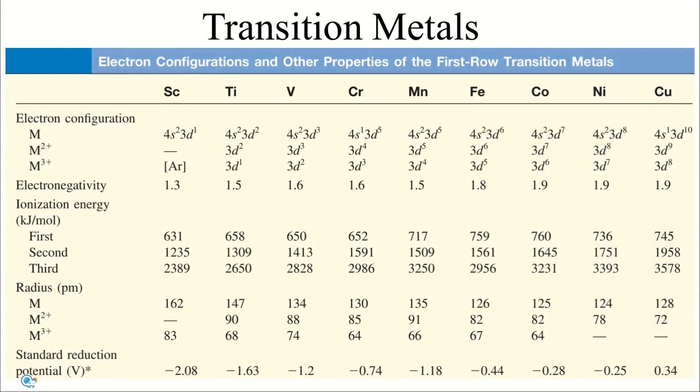Transition metals exhibit variable oxidation states in their compounds, and this figure shows the oxidation states from scandium to copper. Note that the common oxidation states for each element include +2.